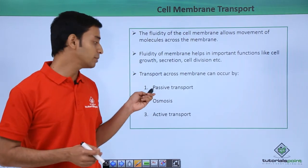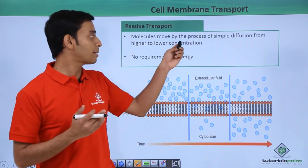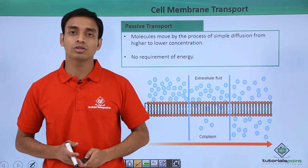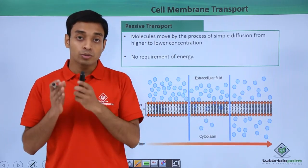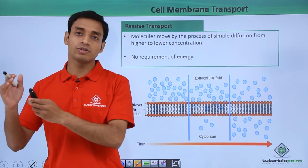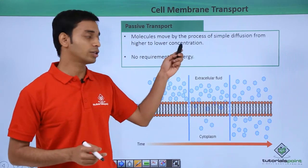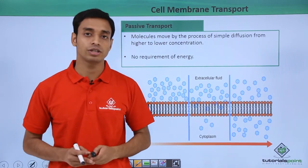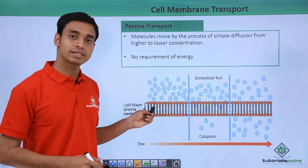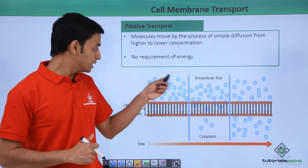The first type of transport is passive transport. Passive transport happens by simple diffusion — the movement of molecules from higher concentration to lower concentration. Very importantly, this process of diffusion or passive transport does not require energy. Let us understand this with the help of an example.